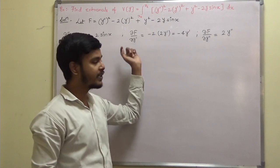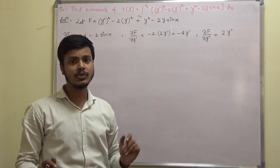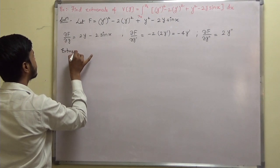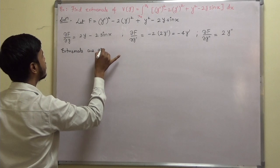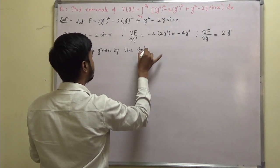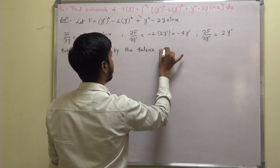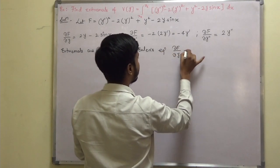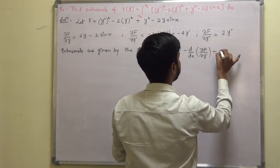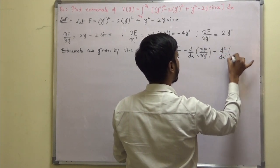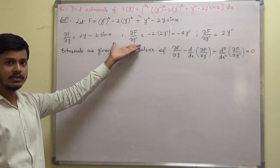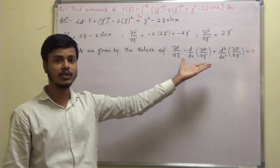The first step is to write down the function f and find all the derivatives. Next, write down the Euler's equation: extremals are given by the Euler's equation, namely ∂f/∂y minus d/dx of ∂f/∂y-dash plus d²/dx² of ∂f/∂y-double-dash equals zero. Now you have all the derivatives and the Euler's equation — substitute.